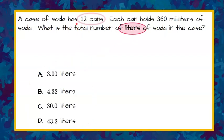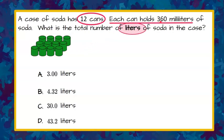We are given information that we have a case of soda with 12 cans. Then we're told that each can holds 360 milliliters. So when I look at one of these cans, it has 360 milliliters. And we want to know the total number of liters of soda in the entire case.